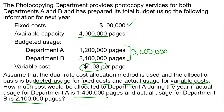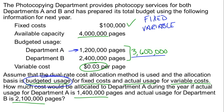We have two allocations to do: fixed costs and variable costs. For fixed costs, we use budgeted usage. Total budgeted usage is 3.6 million pages, and department A's budgeted usage was 1.2 million — which is exactly one third, or 33.33%. We multiply that by the $100,000 of fixed costs, which gives us $33,333 of fixed costs allocated to department A.